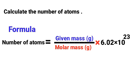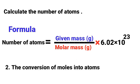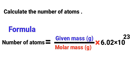This formula is the combination of two steps. Step one is to calculate the number of moles, and step two is the conversion of moles into atoms. First, you find out the number of moles, then multiply that number of moles by 6.02 × 10²³ to get the final answer.